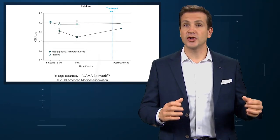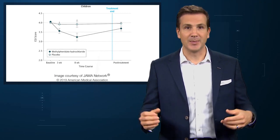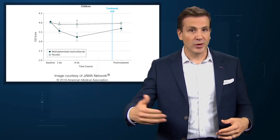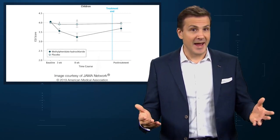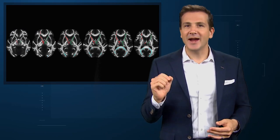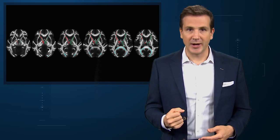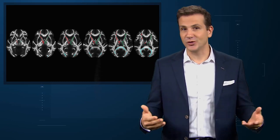A previous report of this cohort showed clinical improvement with methylphenidate, but the important question in this study is, why? Based on prior animal studies, the researchers hypothesized that they might see changes in white matter structure in the brain, as evidenced by differences in fractional anisotropy.